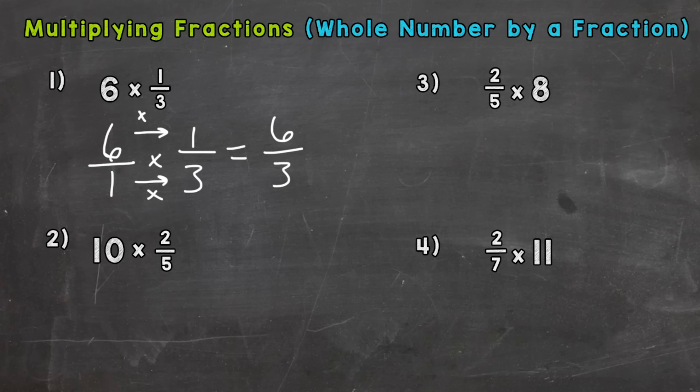Now that's an improper fraction meaning the numerator or top number is greater than the denominator. So what we do is we divide the numerator by the denominator. So 6 divided by 3, and that's going to give us a whole number answer. So how many whole groups of three can we pull out of six?